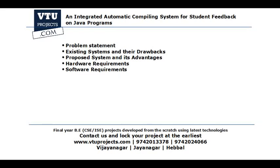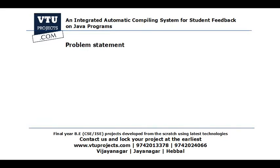So these are the things I am going to explain right now. First, I will state the problem clearly, indicating what we are supposed to do in our project. Then I will explain the existing systems, available solutions to solve the problem and their drawbacks, followed by the proposed system and its advantages, and then the hardware and software requirements.